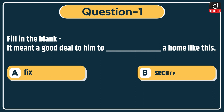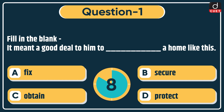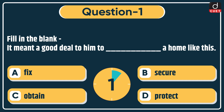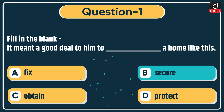Now let's begin today's session. First question is fill in the blank: 'It meant a good deal to him to dash a home like this.' Options: Fix, Secure, Obtain, or Protect. The correct answer is option B: Secure.